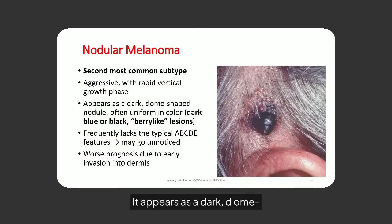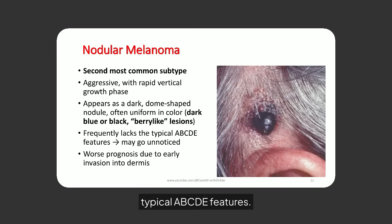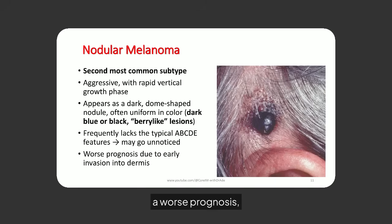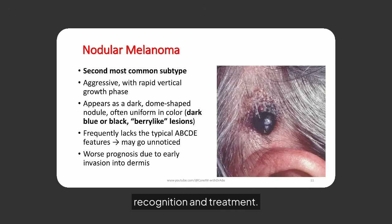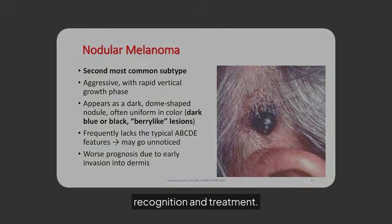Nodular melanoma is aggressive, with rapid vertical growth. It appears as a dark, dome-shaped nodule, often lacking typical ABCDE features. Early dermal invasion leads to a worse prognosis, highlighting the need for prompt recognition and treatment.